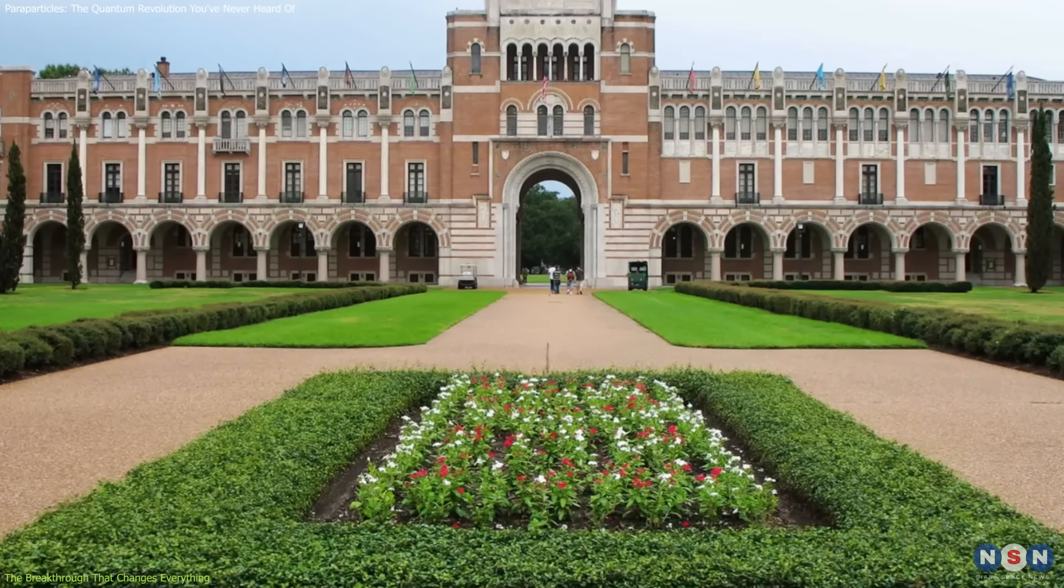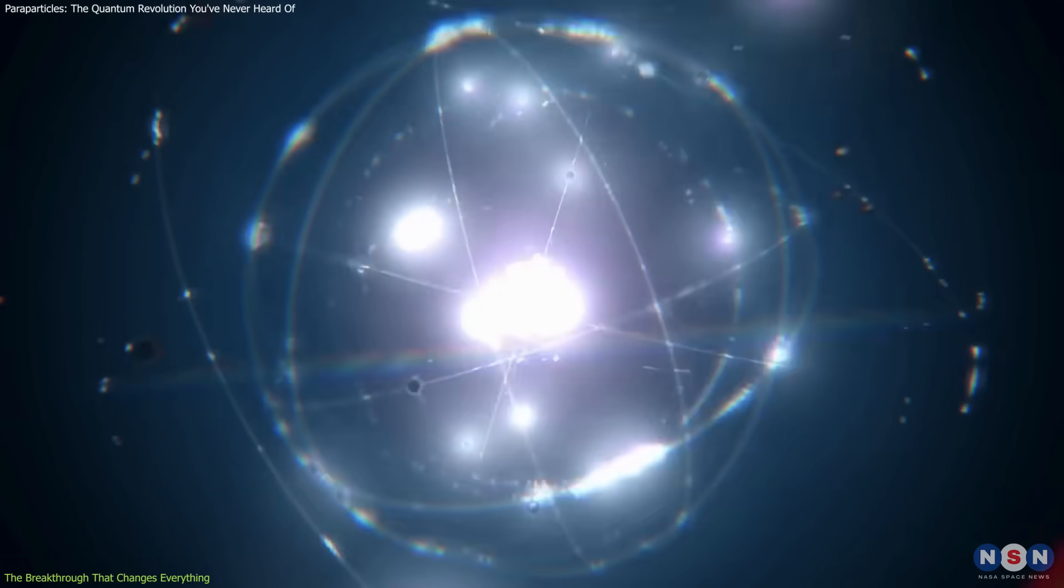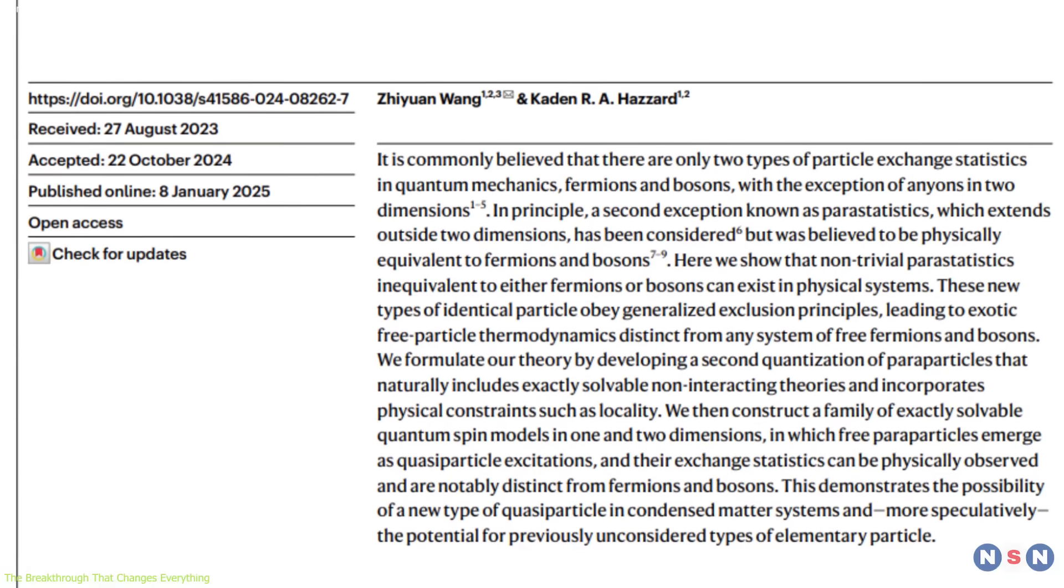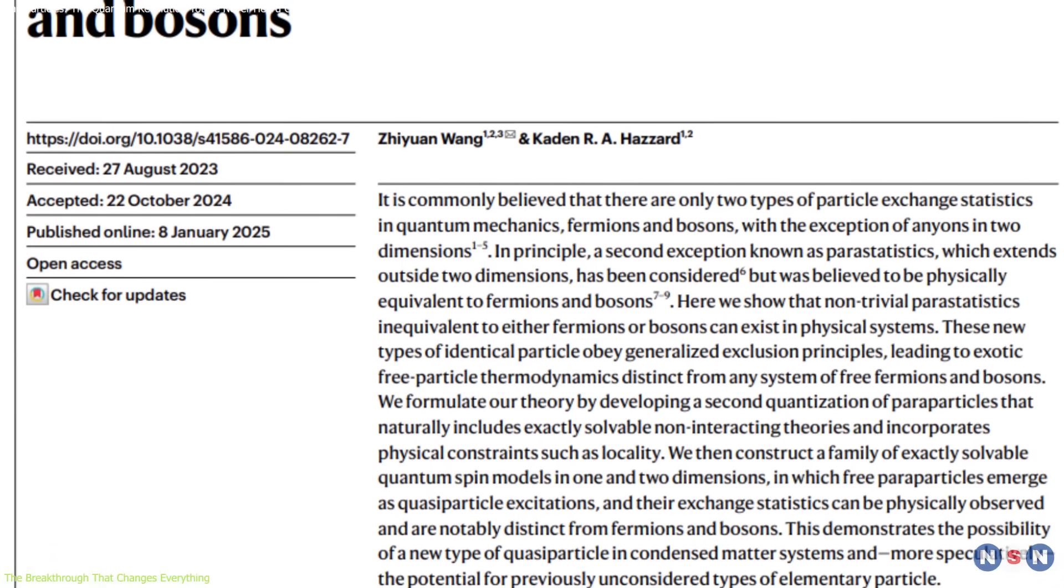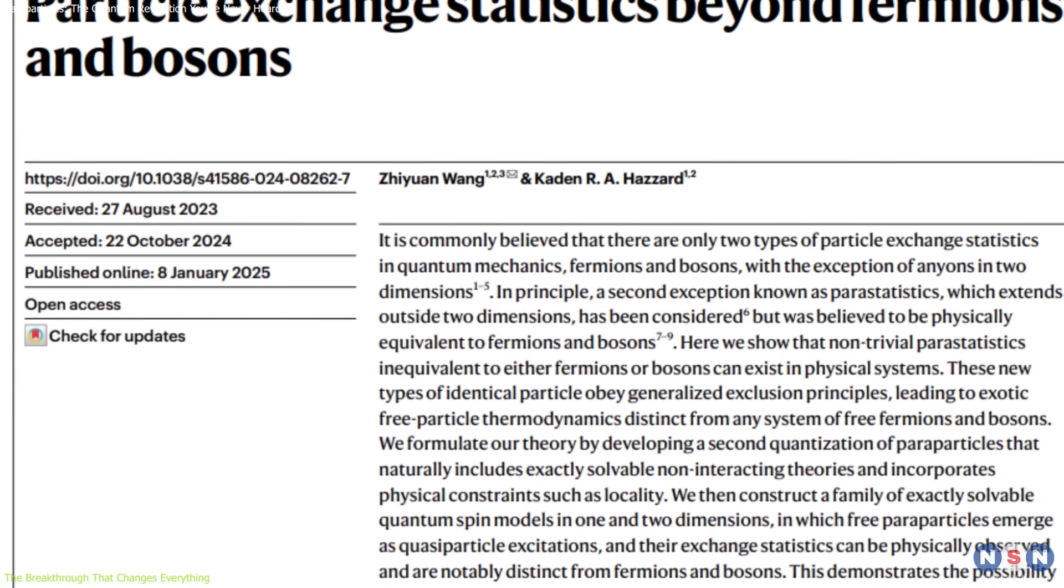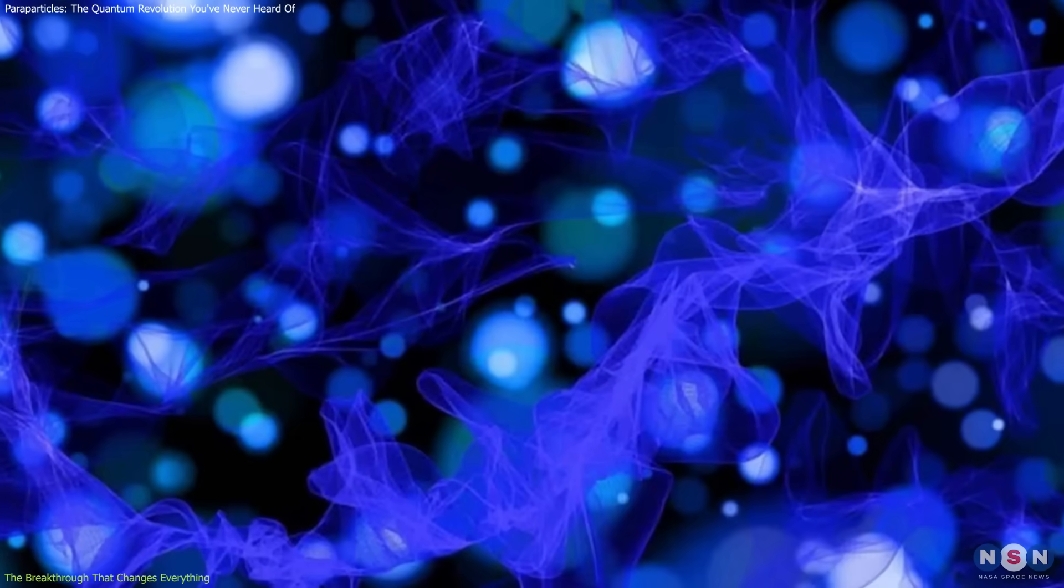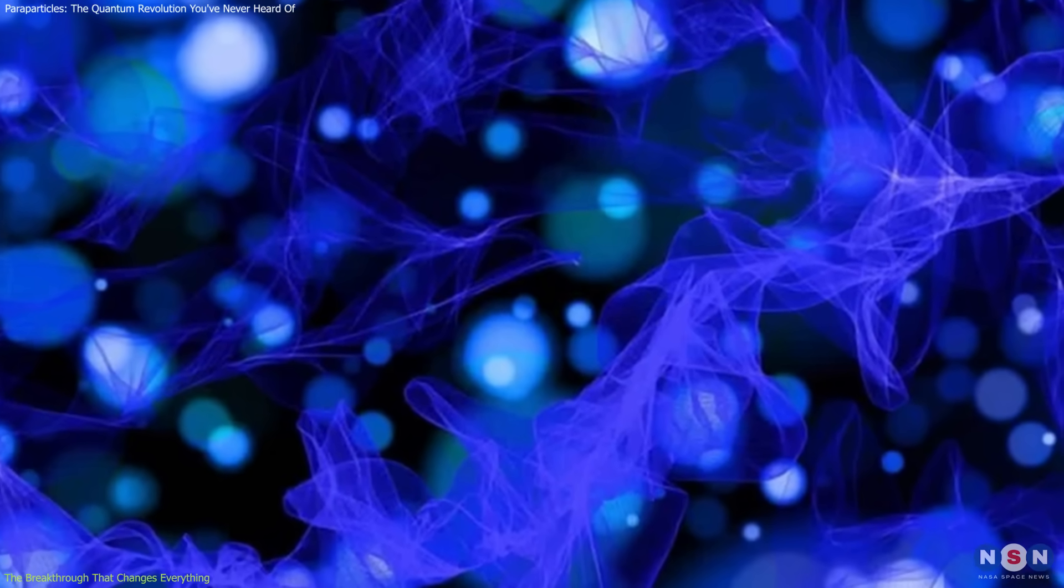But now, researchers from Rice University have thrown a wrench into this tidy framework. Caden Hazard and Jiwon Wang published a study in Nature, showing that a third category of particles might exist: paraparticles. These aren't bosons, and they aren't fermions.